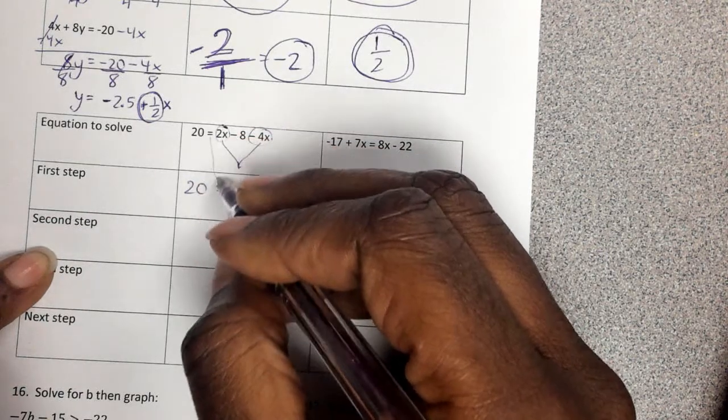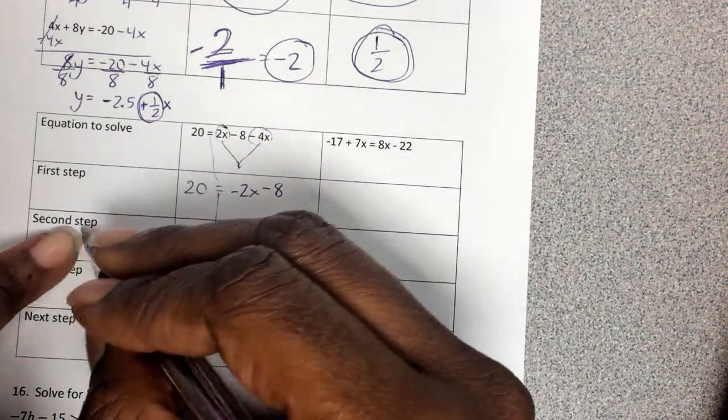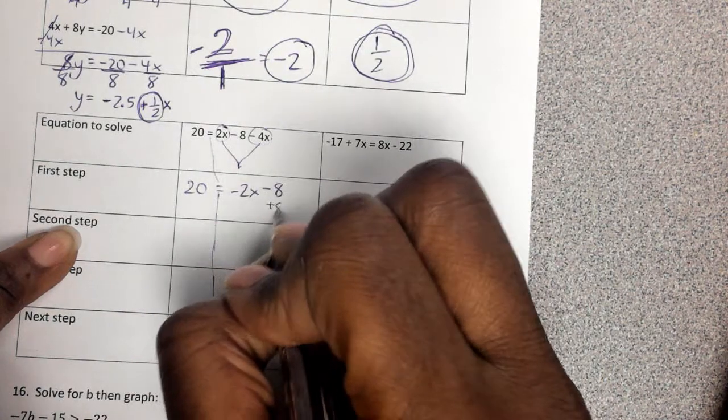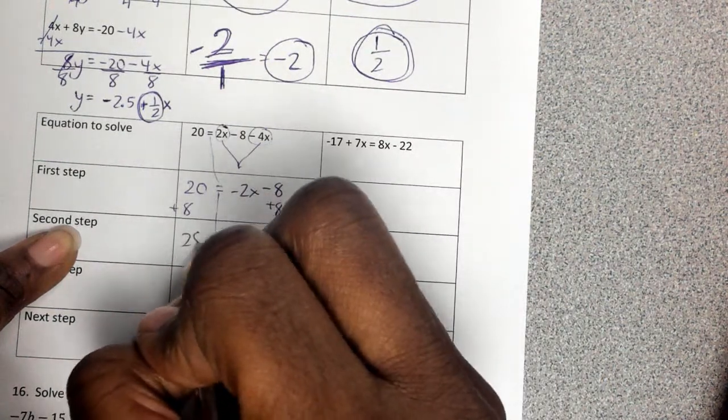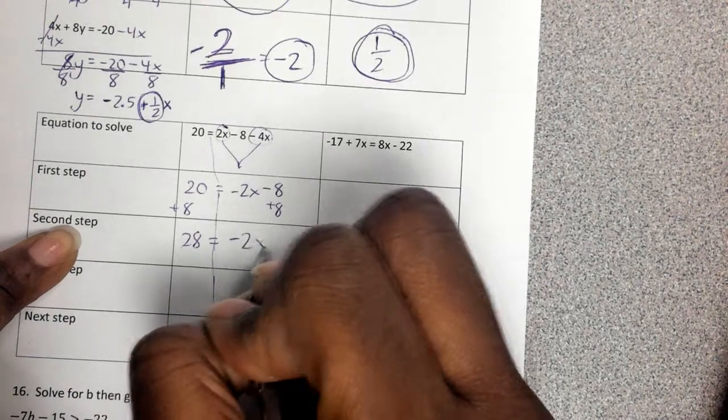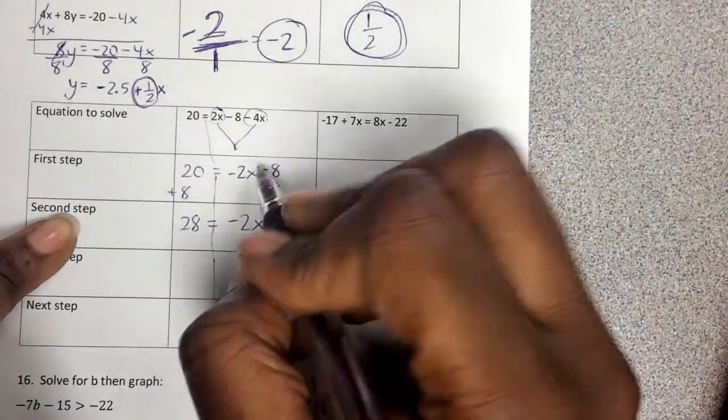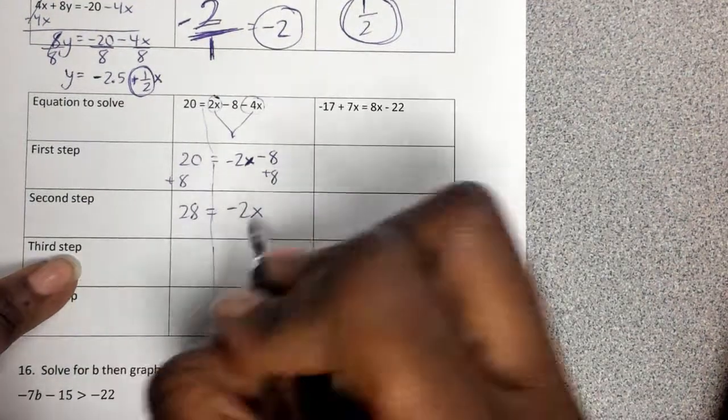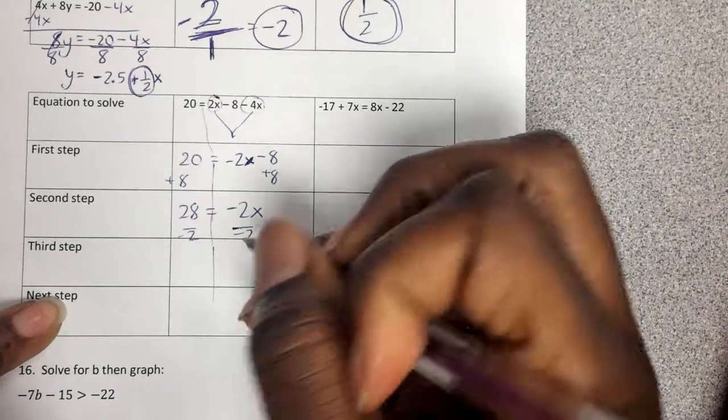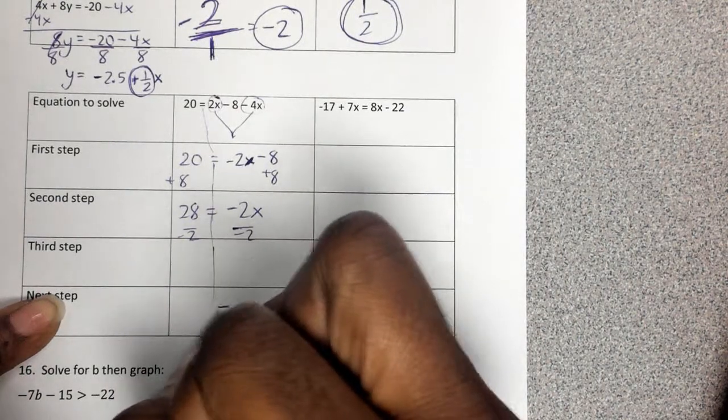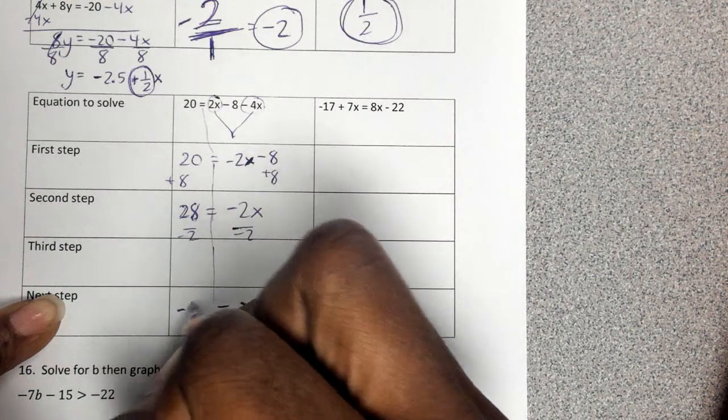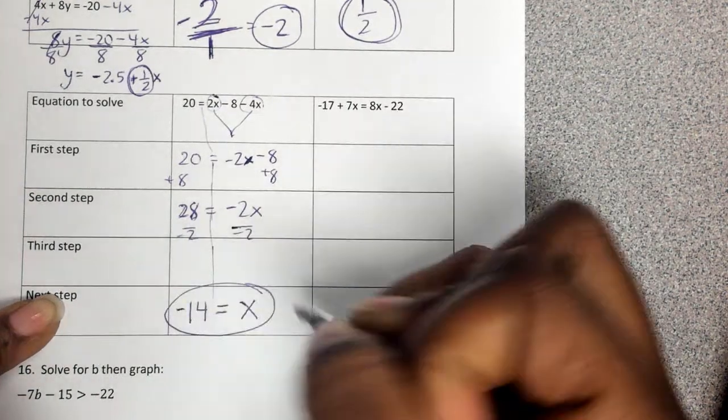Second step is now we want to isolate this x. So I want to add 8 over here. So I'm getting 28 equals negative 2x. Remember, I want to get the x by itself. Third step is divide both sides by negative 2. So then my answer is just x equals. And yeah, the x is over here. 28 divided by negative 2. And that's negative 14. That's my answer.